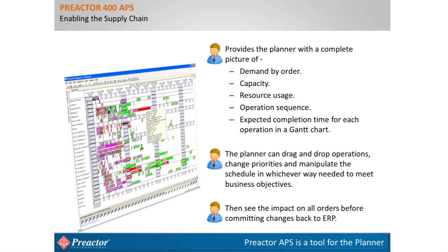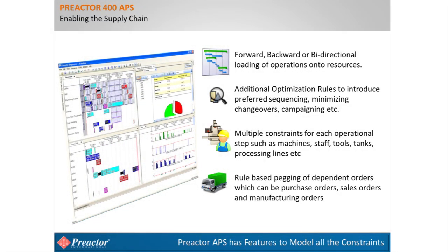Preactor 400 APS provides users with a complete picture of demand, capacity, resource usage, operation sequence, and expected start and finish times in the form of an interactive Gantt chart. The planner can interact with the chart by dragging and dropping operations in time and between capable resources, and can change priorities to see the impact on the overall schedule. Having used automated rules, made manual adjustments, and compared alternative schedule options, the planner can release the schedule to the shop floor and ERP. The planner also has options to load orders forward from the first operation, backward from the last, or bi-directionally around a critical operation.